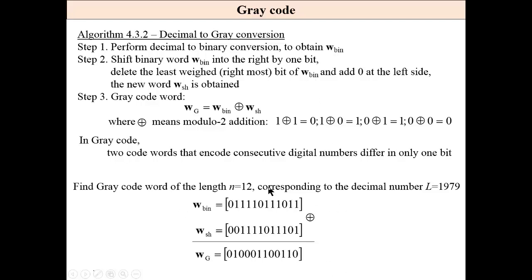For this number in binary, we shift this number by one bit, which means we add zero here. And this is the number, and this one is deleted. Then we add modulo 2 to obtain the code word in grey code.